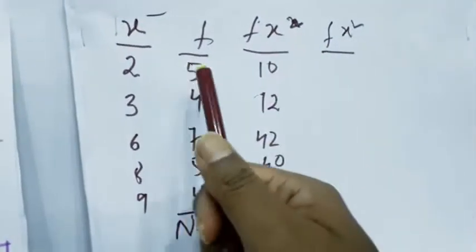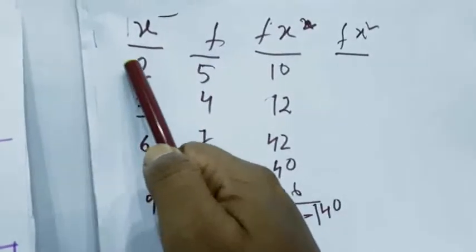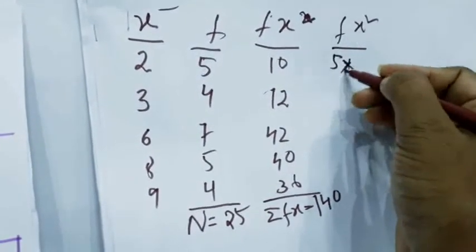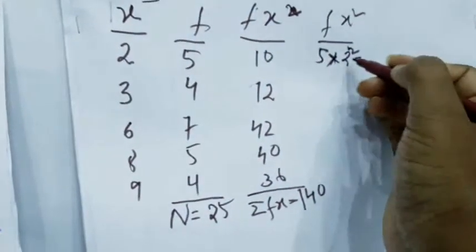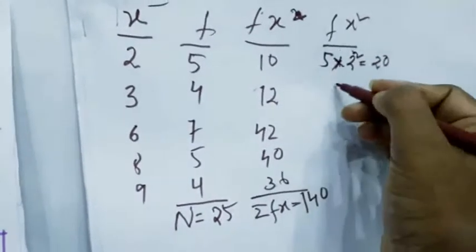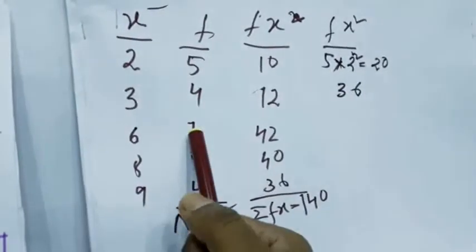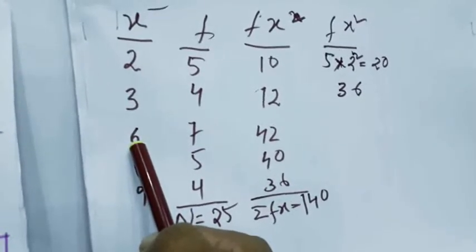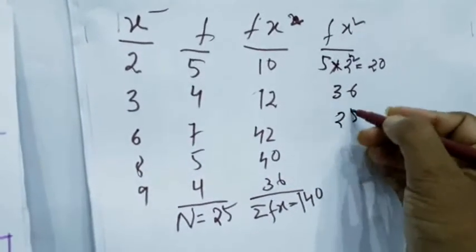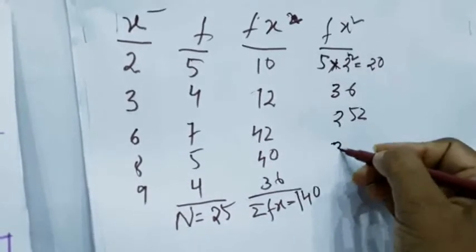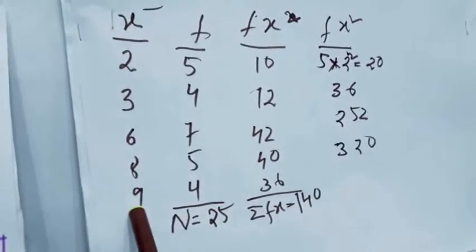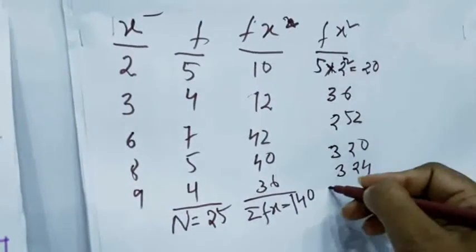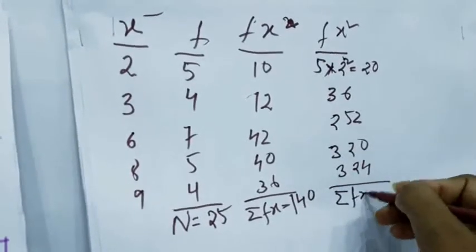F x square means f into x square. For the first row: 5 into 2 square, that is 5 into 4 equals 20. In this way we will get 36. Then x square: 6 into 6 is 36, 36 into 7 is 252. Then 64 into 5 is 320. Then 81 — that is 9 square — into 4 is 324.